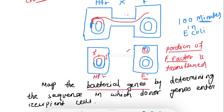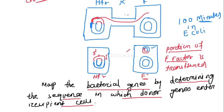This technique is used to map the bacterial gene — the donor gene enters the recipient cell. Along with the F factor, some of the bacterial genes are also transferred. From the sequence in which the bacterial genes are transferred to the recipient cell, we can map the bacterial genes.